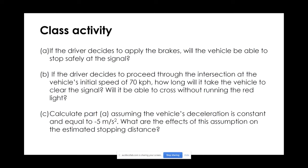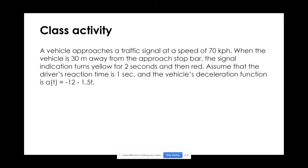The second question asks: if the driver decides to proceed through the intersection at the vehicle's initial speed of 70 kilometers per hour, how long will it take for the vehicle to clear the signal — will it be able to cross without running the red light? The last part asks us to recalculate part A assuming the vehicle's deceleration is constant at minus 5 meters per second squared, and to assess the effect on estimated stopping distance. Let's visualize this before we tackle the problem.